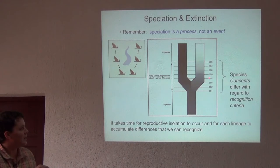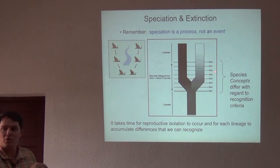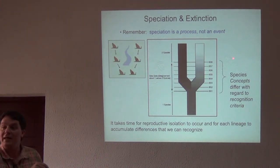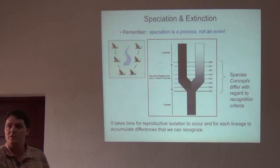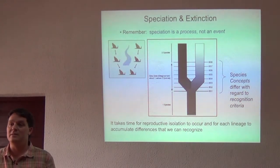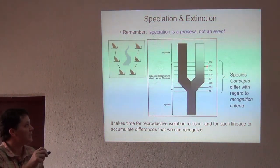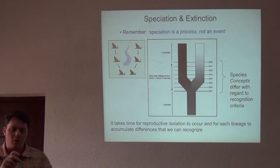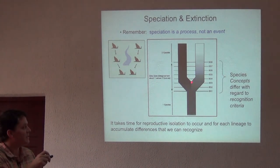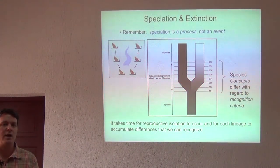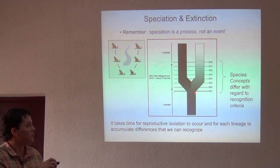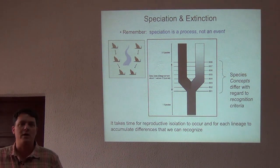One taxonomist might recognize one spot in the tree; another focused on ecology might focus on a different level; a morphology-focused taxonomist might recognize things as separate species at yet another level; and a molecular taxonomist might only recognize a certain level of divergence. All of these are somewhat artificial with respect to the actual process. The different species concepts are all just taxonomists focusing on different kinds of characters and recognition criteria. But the process of divergence starts here and ends here — the evolutionary process is agnostic with respect to the way in which we perceive it.